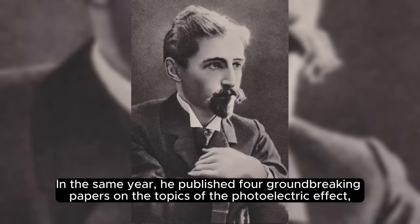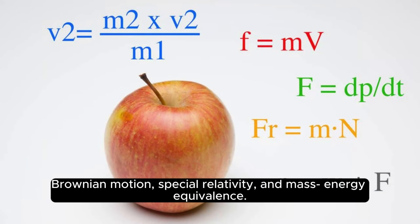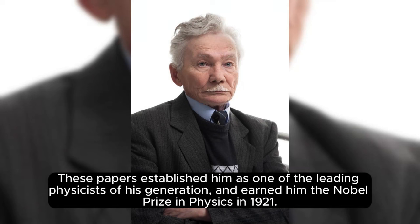In the same year, he published four groundbreaking papers on the topics of the photoelectric effect, Brownian motion, special relativity, and mass-energy equivalence. These papers established him as one of the leading physicists of his generation and earned him the Nobel Prize in physics in 1921.